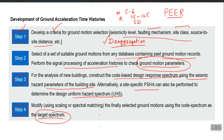If the spectrum looks like this — SA versus time period — it will tell you what peak spectral acceleration you should expect at this site in what range of time periods. For each time period it gives you the spectral acceleration value.